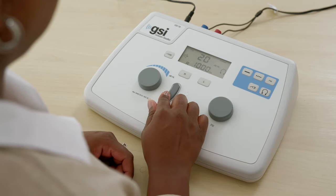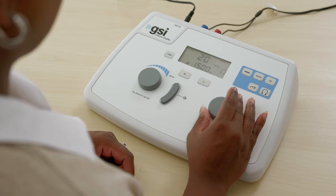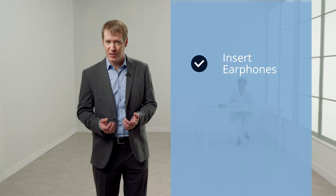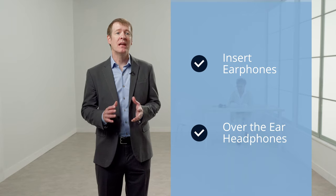The transducer selection will enable the proper calibration file for the selected transducer. The button with the picture of the insert phone will activate the insert earphone calibration, while the button with the picture of the headphones will activate the over-the-ear headphone calibration. The selected transducer will be indicated on the LED screen of the GSI 18.